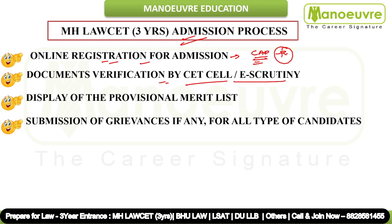The next step is document verification by CET cell, which is called e-scrutiny. Your documents are verified, and if there is any discrepancy in your documents, the CET cell will indicate it on your dashboard. Then comes the display of the provisional merit list. Once you register and e-scrutiny is done, any problematic documents will be shown and you need to resolve those discrepancies by submitting corrected documents — this is called submission of grievances.